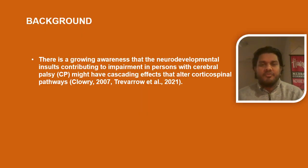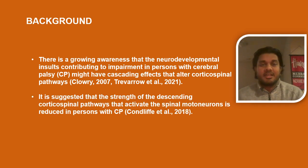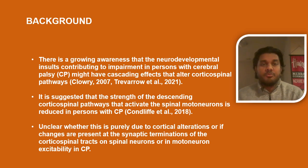Just to give a little background, there is a growing awareness that the developmental insults that contribute to impairment in people living with cerebral palsy may actually have cascading effects that alter the pathways that connect the brain and the spinal cord. It's been suggested that the connections between the brain and the spinal cord are reduced in people with cerebral palsy. However, we don't know if this is primarily due to changes in the brain itself, particularly in the cortical regions, or if these changes are present further down in the spinal cord, particularly at the terminations of these pathways at the spinal levels or in the spinal neurons themselves as they receive this information from the brain.